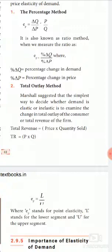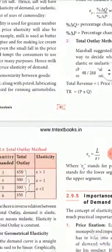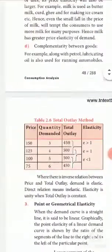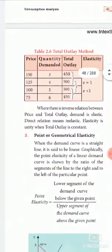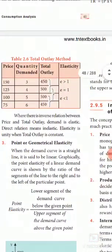In your book, one table is given for the total outlay method. Total revenue is equal to price multiplied by quantity sold.